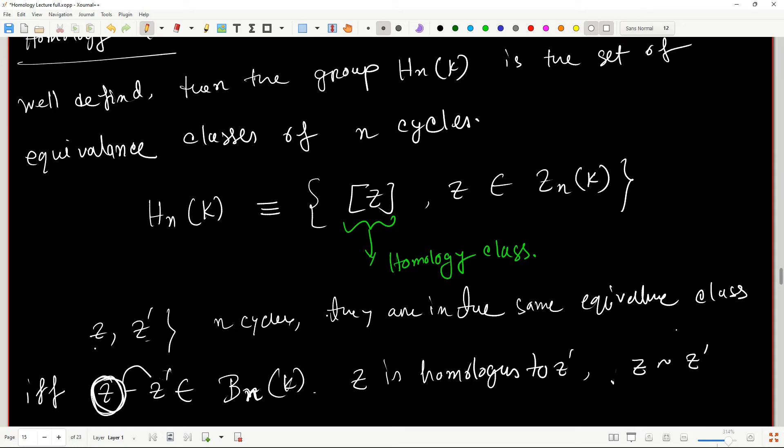And all these informations lead you to a theorem. And that theorem states that these homology groups are topological invariants. So this is the statement that homology groups are topological invariant. And this is the theorem.